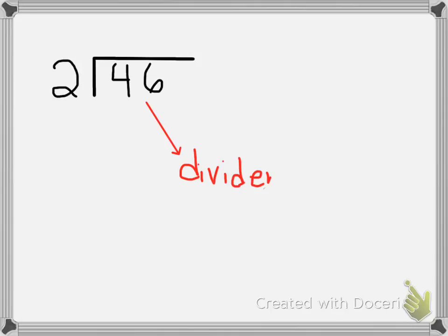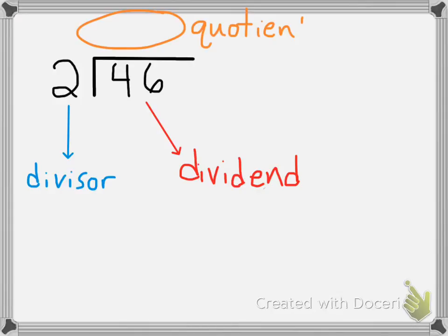So, a couple of important parts about division. This number is the dividend, the number that we are going to be dividing. And this number is the divisor. That's how many groups we're dividing something into. And up here, we're going to have the quotient. That's going to be the answer to the division problem.